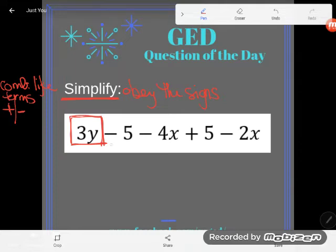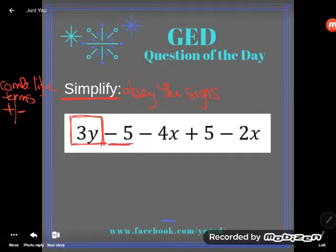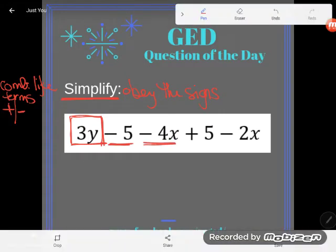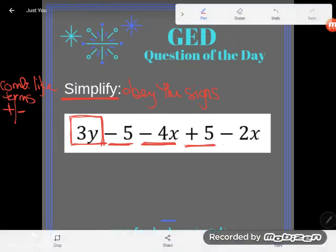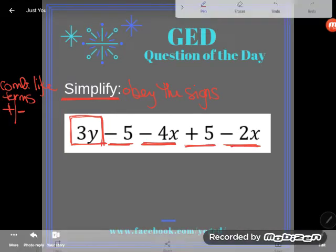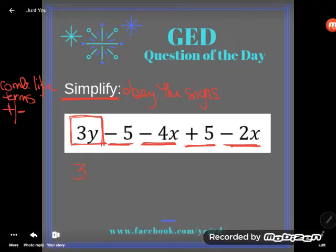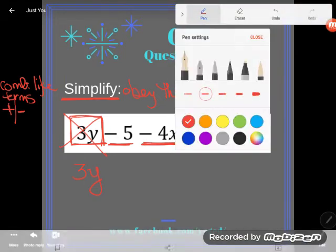And look, notice this term is a plain old number, no y's. This guy has an x not a y. This guy is a plain old number, no y's. And this guy has an x not a y. There is nothing that will combine with y. And so I will just drop him down. He's as simple as he can get. I can't do anything else with him.